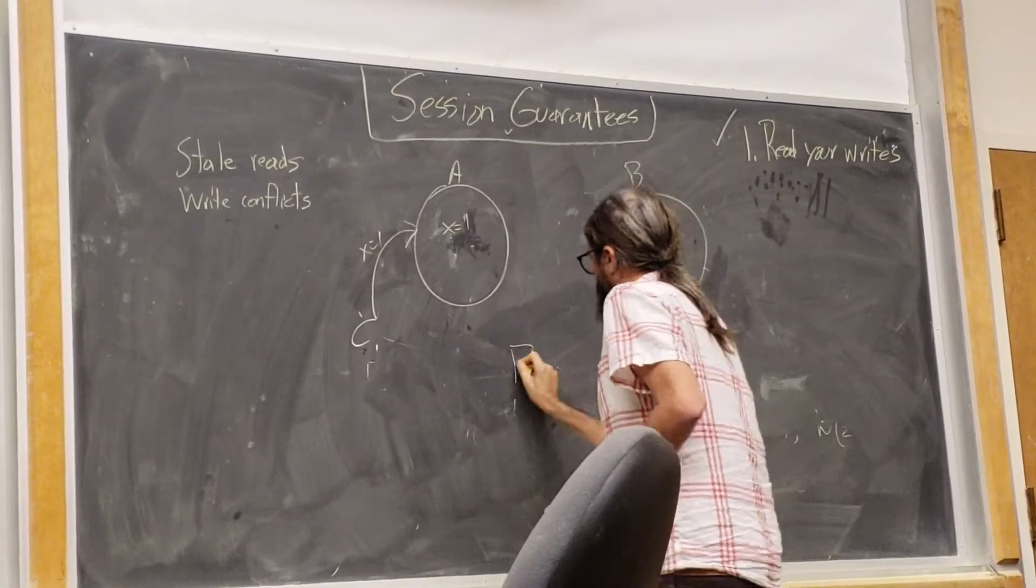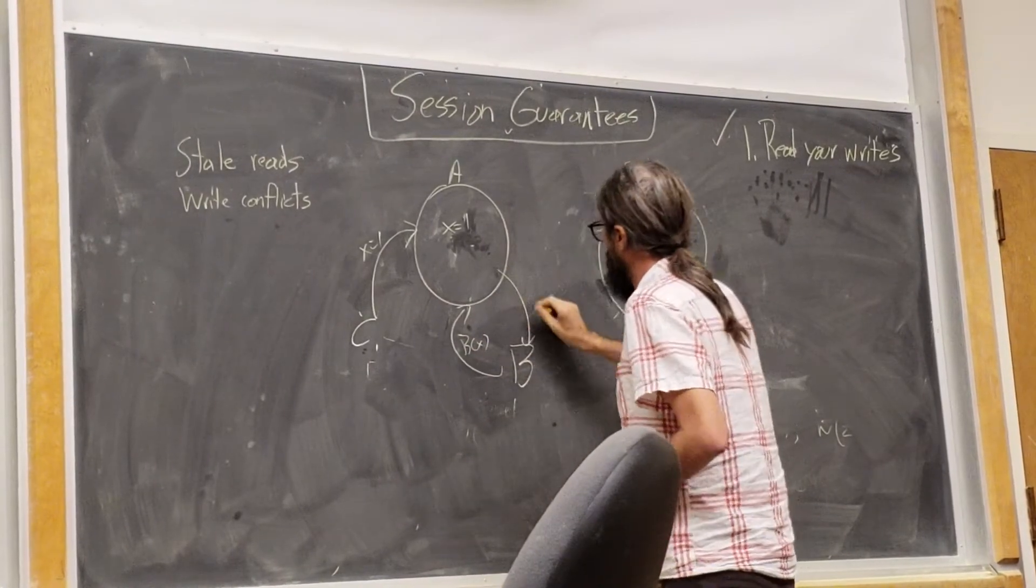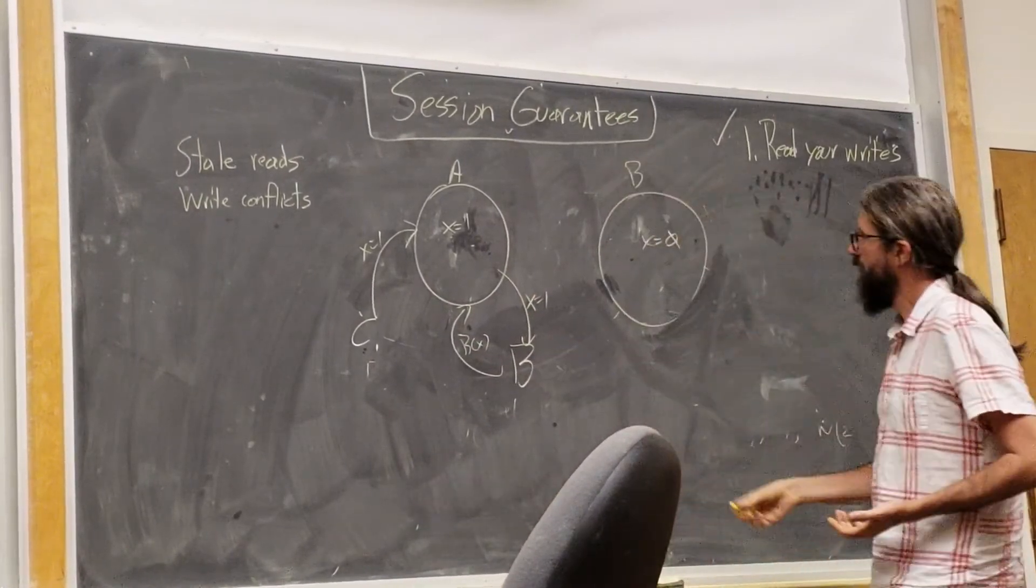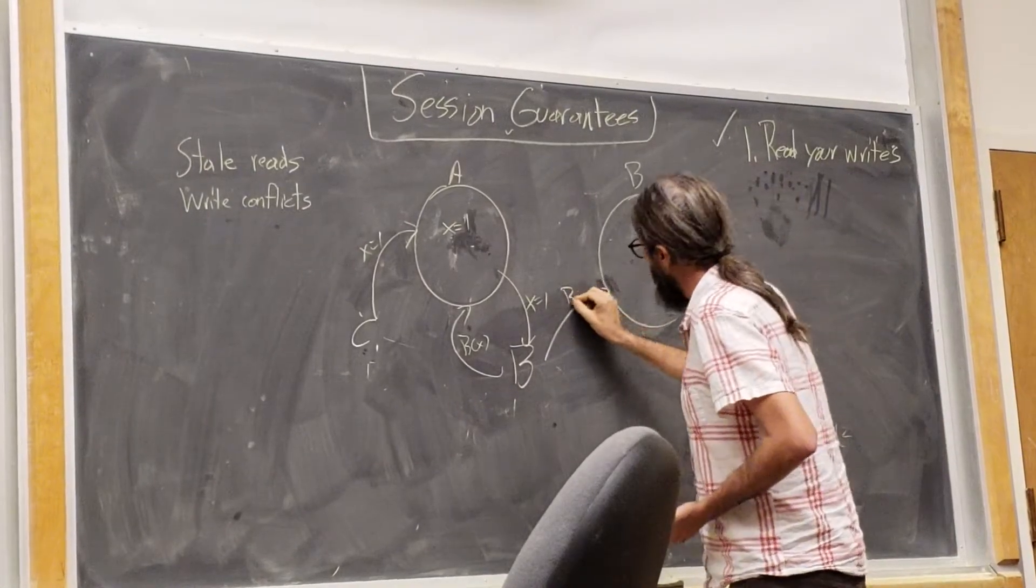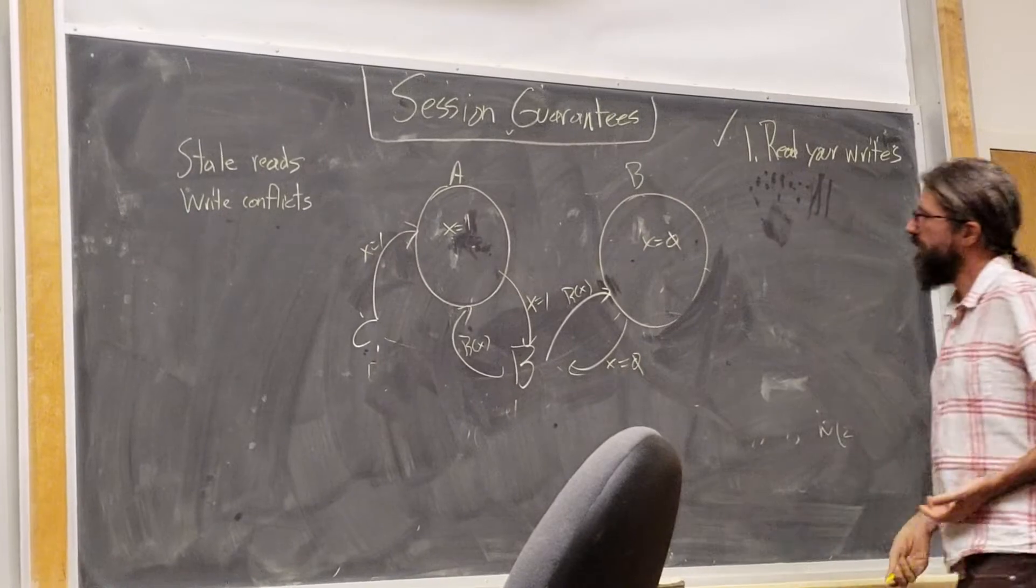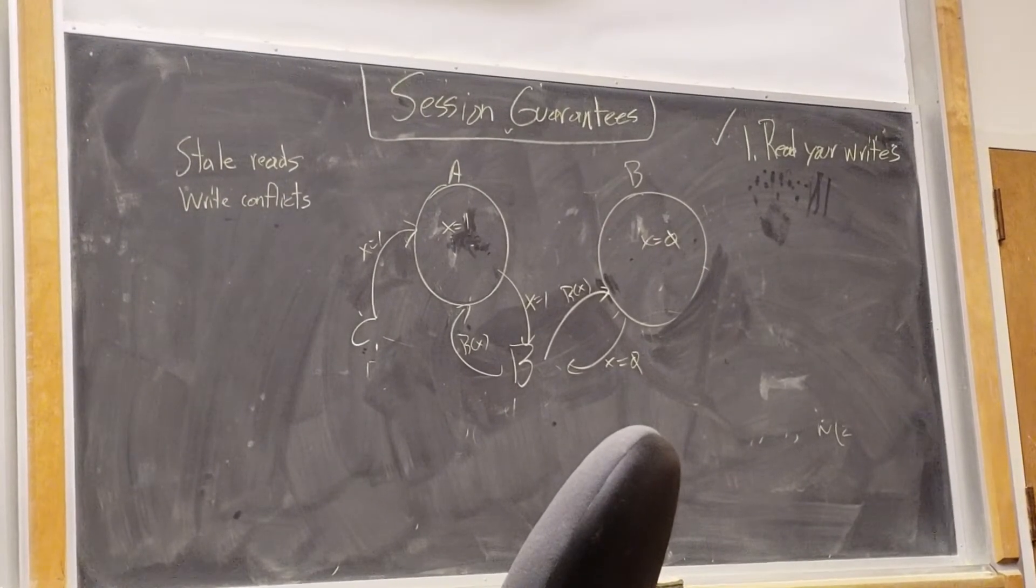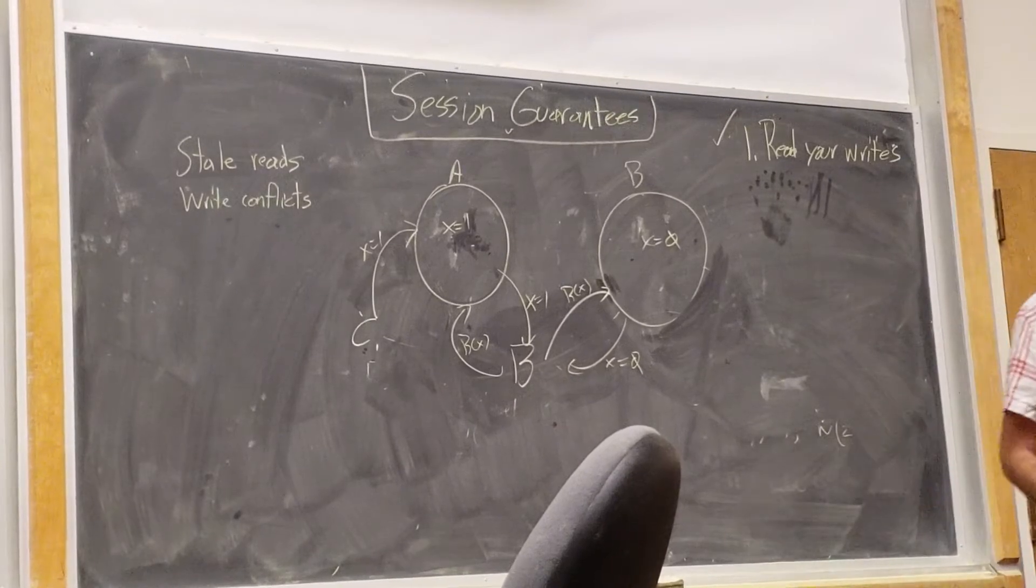And Bob the Beholder comes along and reads x, x is 1, reads x, x is 0. That's not good.